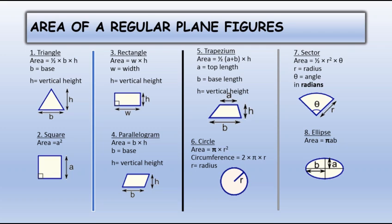Six, the area of a circle is π r squared and the circumference of a circle is 2πr, where r is the radius, which is half of the diameter. Seven, the area of a sector is half r squared times theta, where r is the radius and theta is the angle subtended by the arc in radians. Eight, the area of an ellipse is π a b.